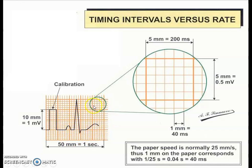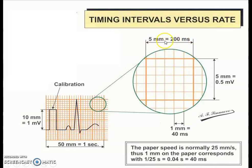If you zoom in, this larger box, you will find that the vertical height of 5 mm is equivalent to 0.5 millivolt. Now if you look at the horizontal division, if the paper speed is set to 25 mm per second, then 1 mm on the paper corresponds to 1/25, which means 0.04 second, or 40 milliseconds. So as there are 5 divisions, 5 multiplied by 40 gives a total of 200 milliseconds. These scales are generally used to calculate the height and width of the individual pulses as well as the complex of the ECG signal.